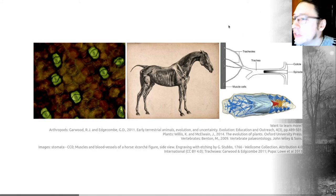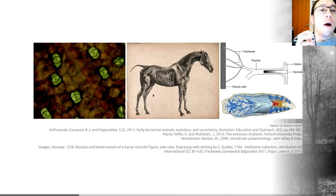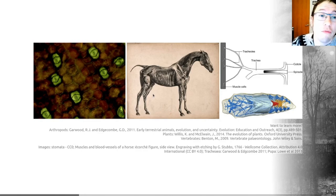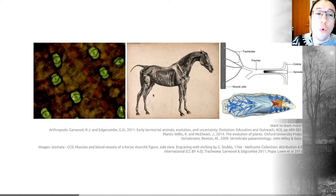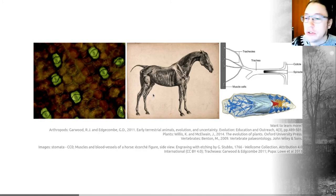Vertebrates, such as this horse from a 1766 illustration, have lungs that allow them to breathe. Lungs are actually a modified swim bladder — also called a gas bladder, fishmaw, or air bladder — an internal gas-filled organ that contributes to the ability of many bony fish (but not cartilaginous ones) to control their buoyancy and stay at their current depth without wasting energy. Those are all adaptations towards breathing oxygen on land.